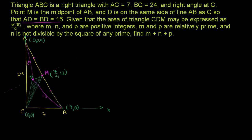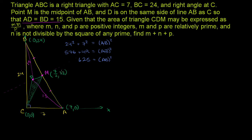We know this is a right triangle, so we use the Pythagorean theorem. We know both legs, so 24 squared plus 7 squared equals AB squared. 576 plus 49 equals AB squared. 576 plus 49 is 625, so AB squared equals 625, meaning AB equals 25. So the hypotenuse is 25, and from B to M and from M to A is 25 over 2.